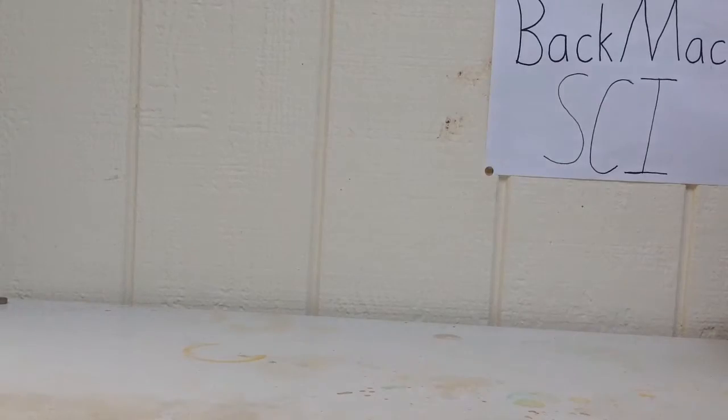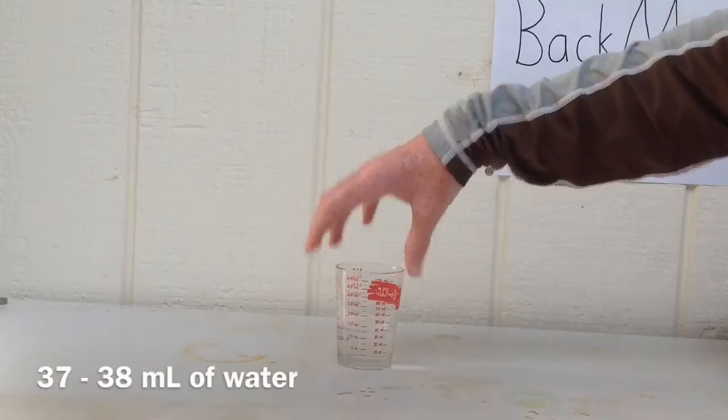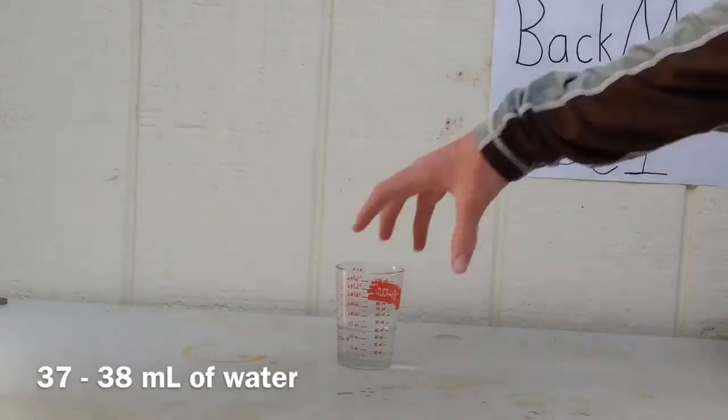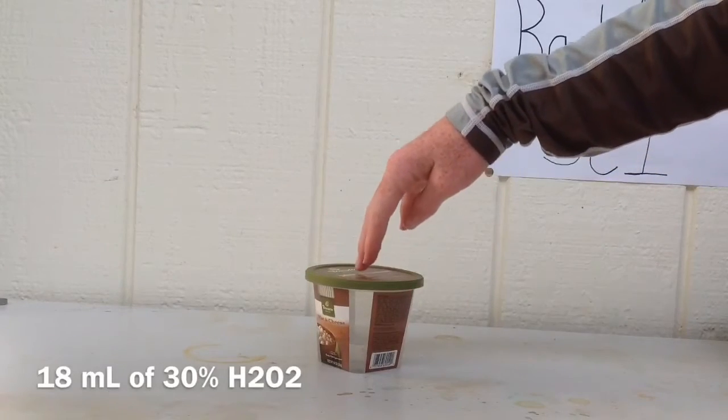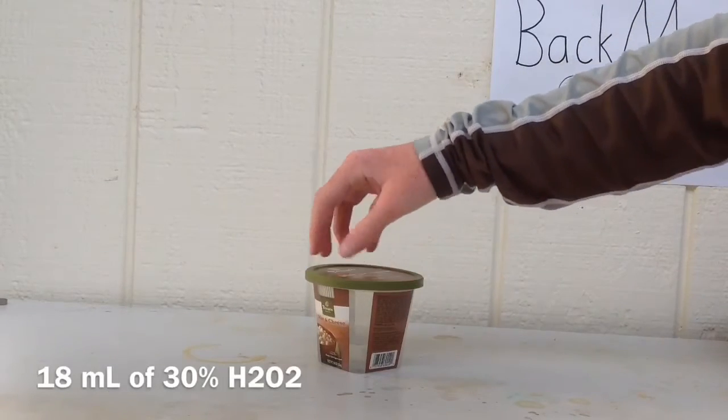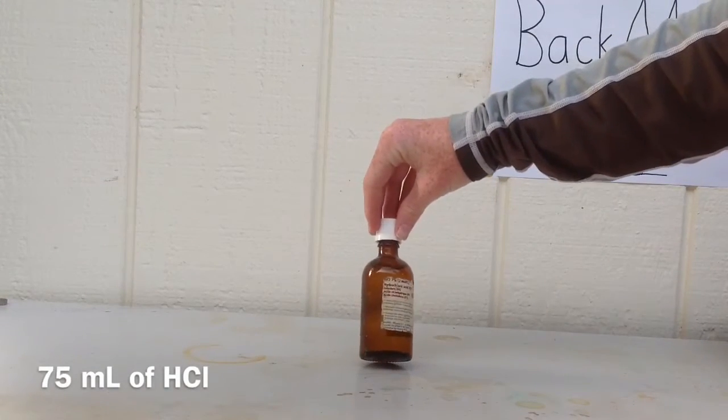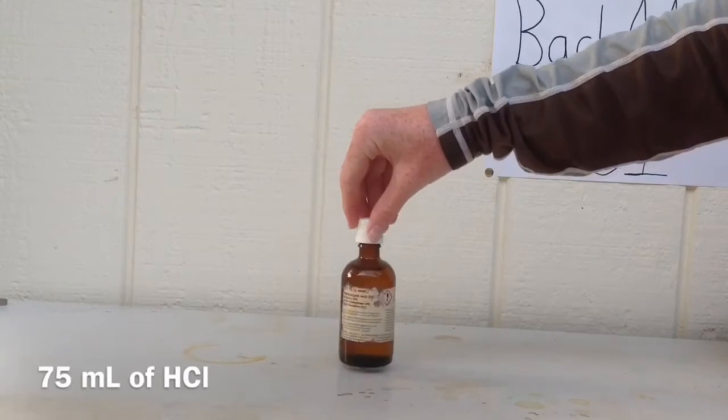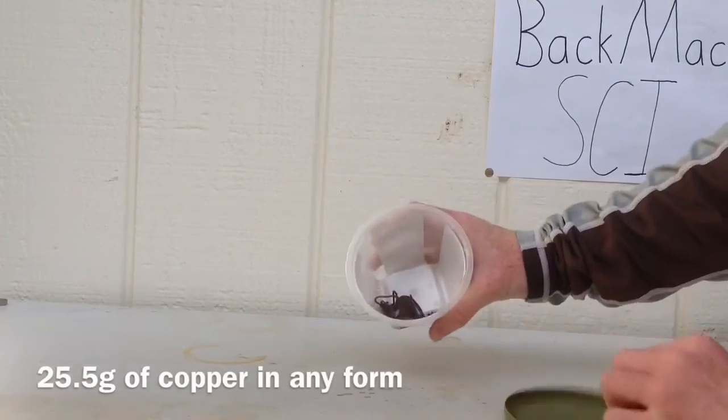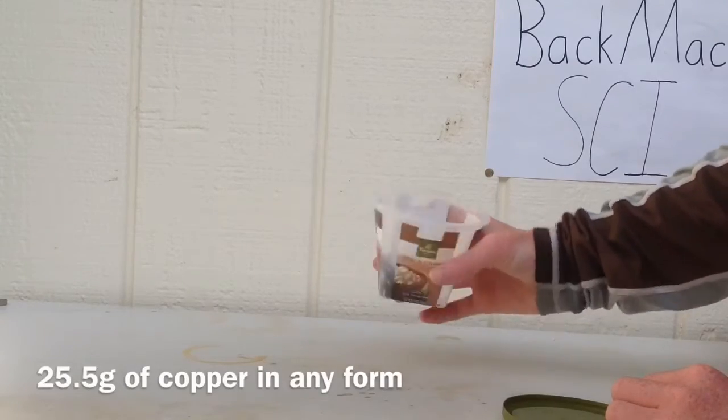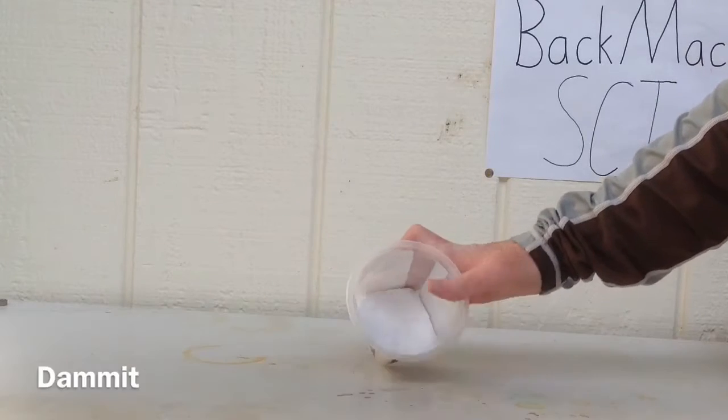What we're going to need today is a 250 milliliter flask, about 37 or 38 milliliters of water, 18 milliliters of 30% hydrogen peroxide, 75 milliliters of concentrated hydrochloric acid, 25.5 grams of copper, and 60 grams of a nitrate salt.